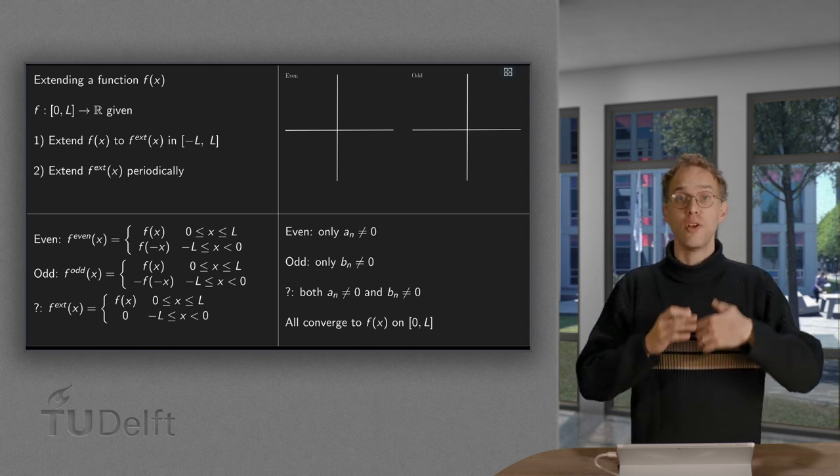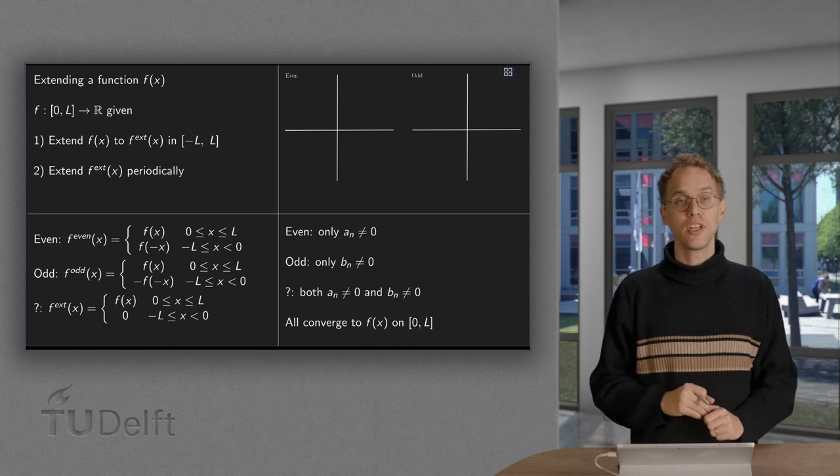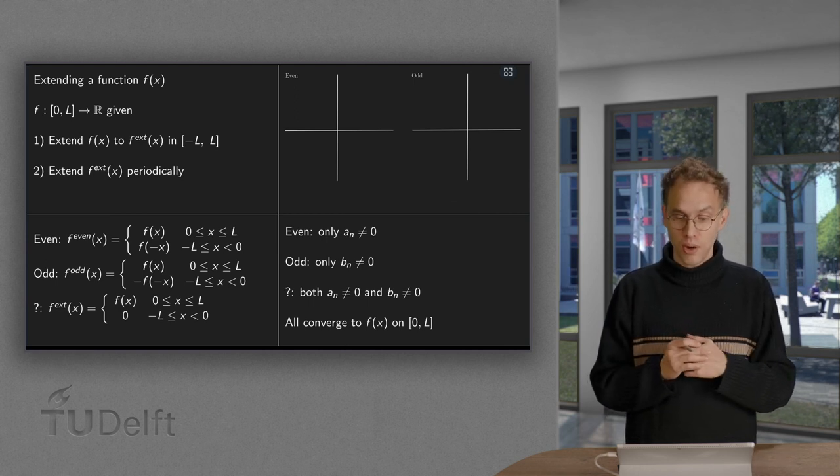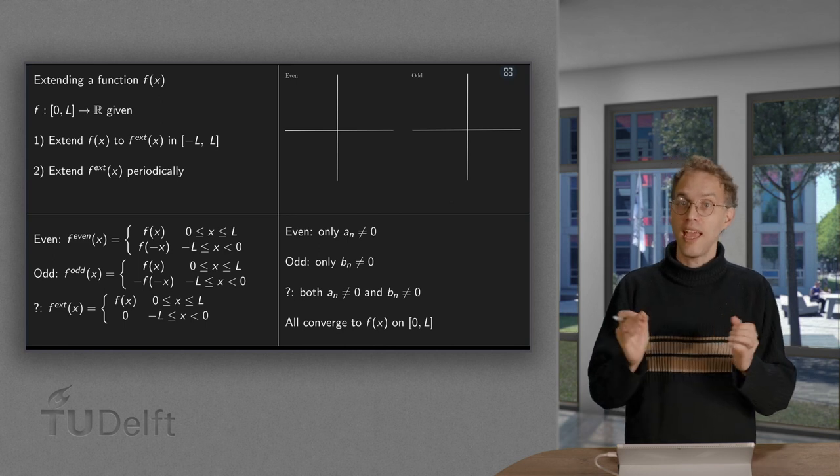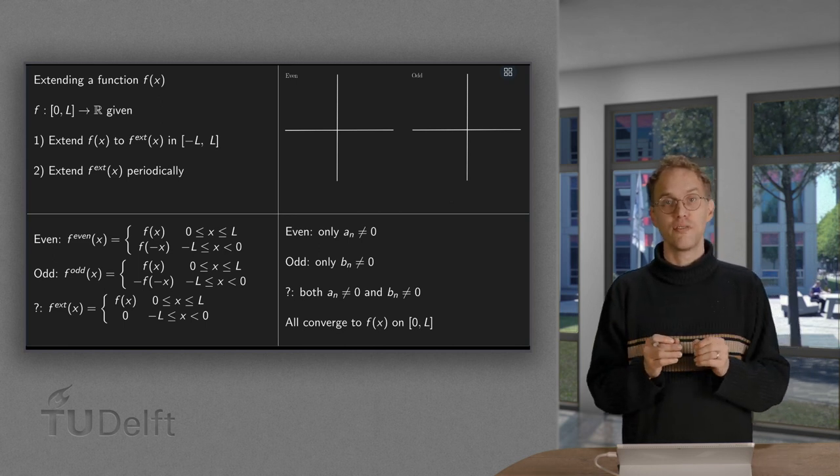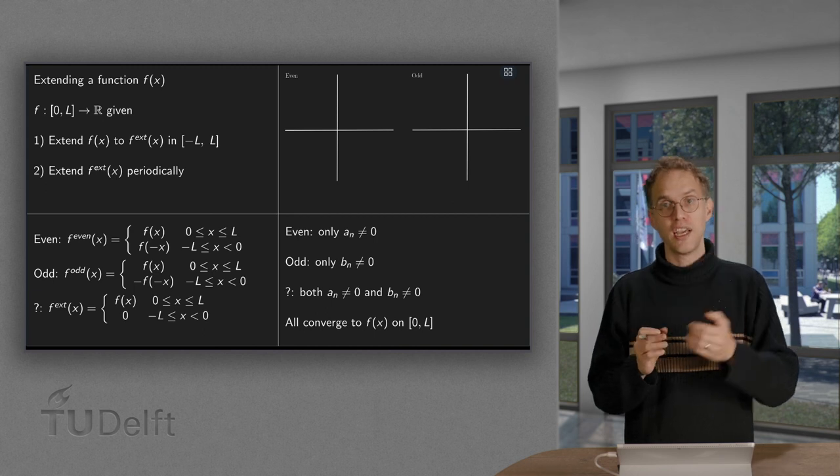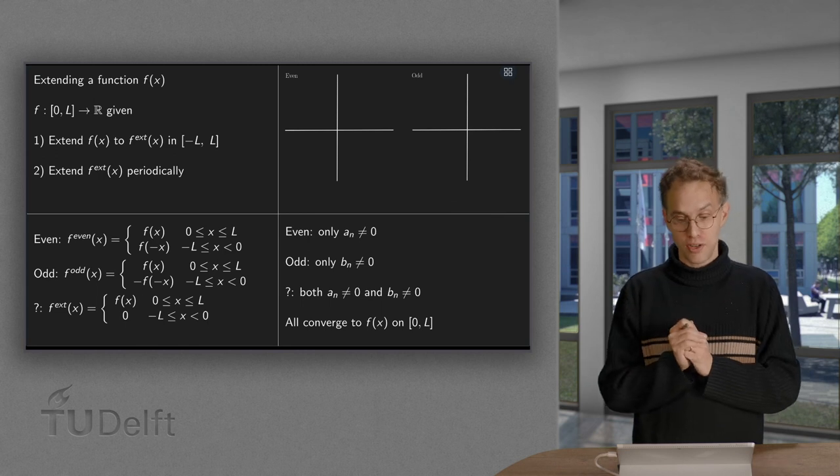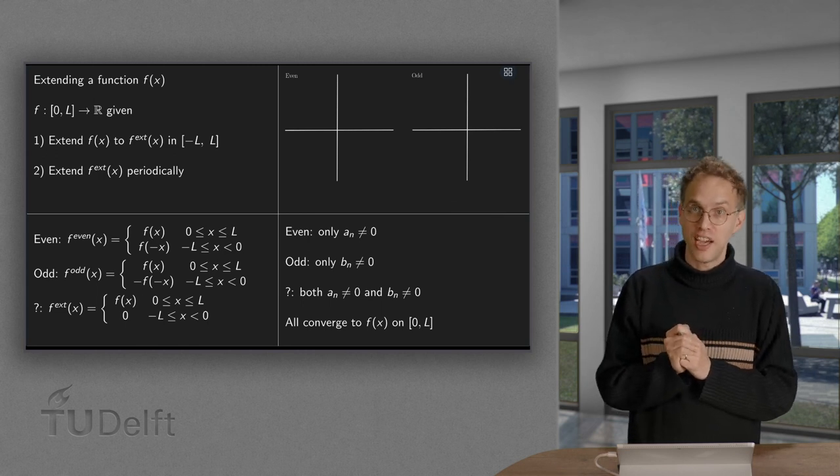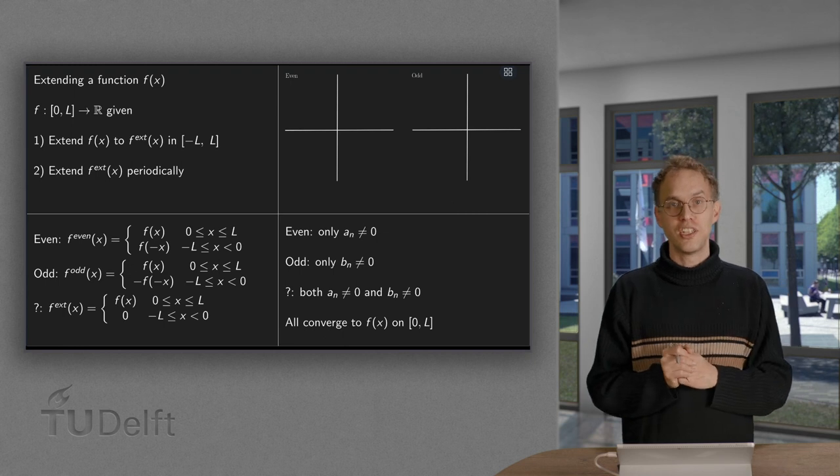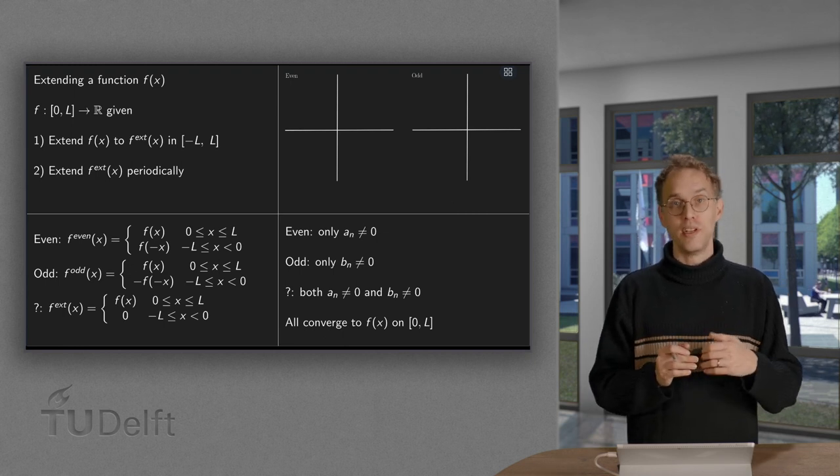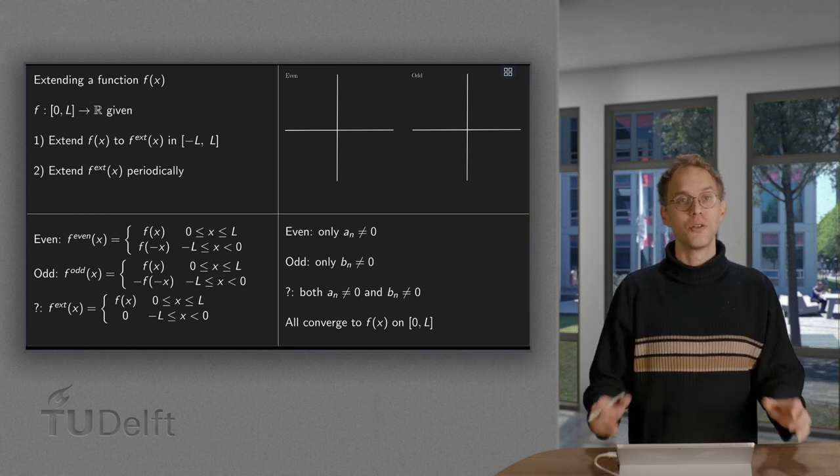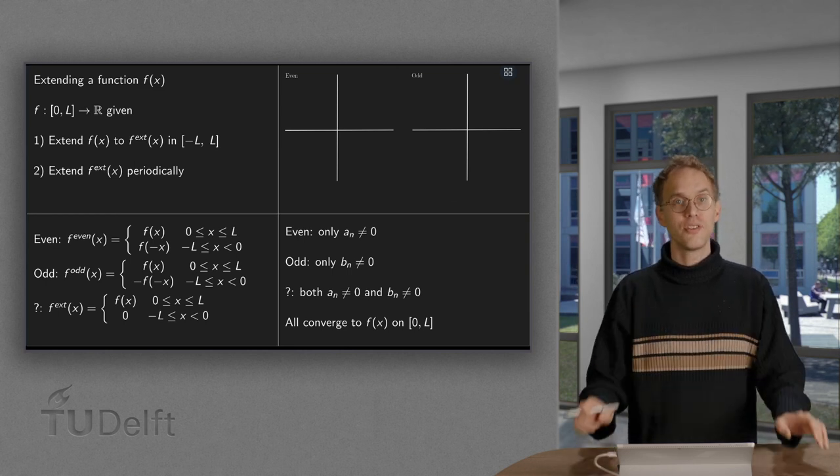If we use an odd extension, we will also get a Fourier series of f(x). But now, only the bNs are non-zero, and all the aNs are zero. So we can get a Fourier series of f(x) in the first case with only aNs and cosine terms, and in the second case with only bNs and sine terms. And the third extension, we can do this as well, but then we will get both aN and bN. However, in all these cases, all these three Fourier series will...